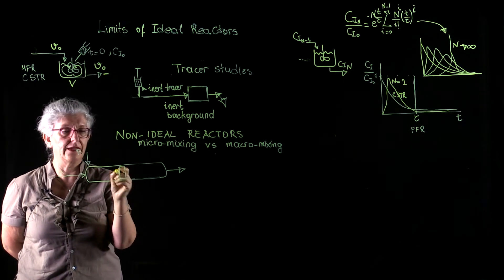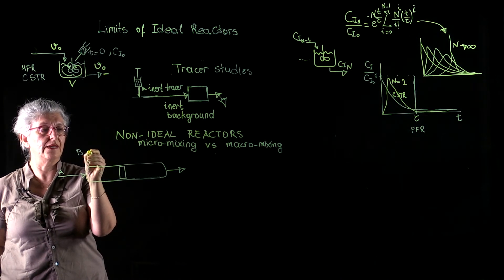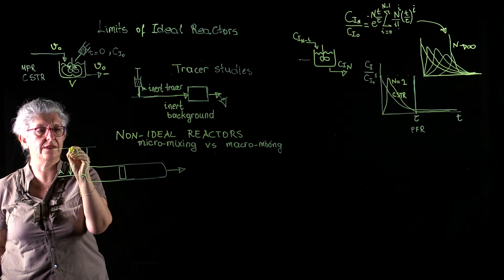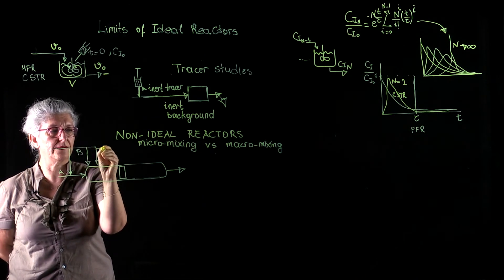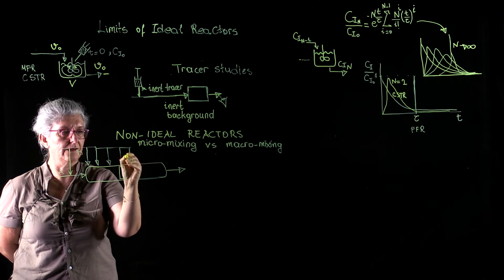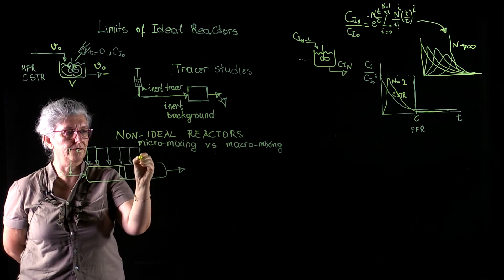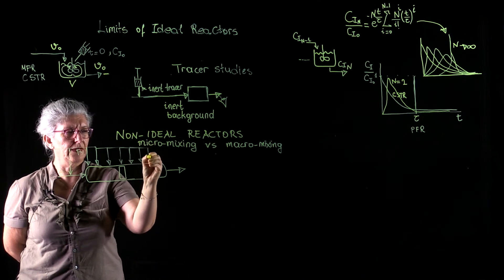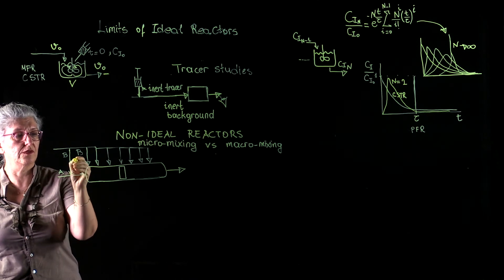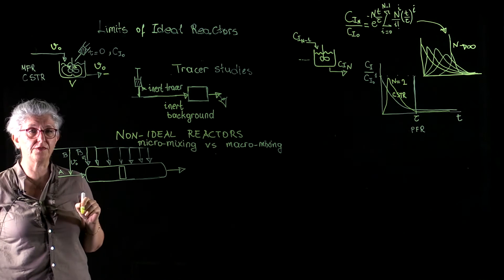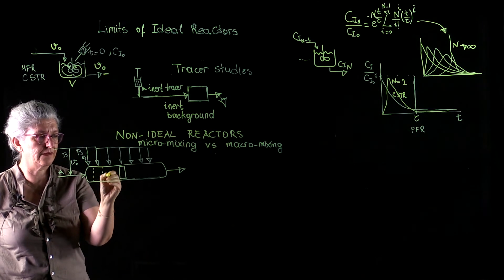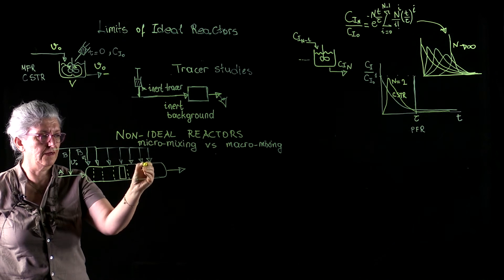But what if we introduce B in small segments, little by little? What happens? We have to write our balance equations. We have to know the volumetric flow rate of each of these streams. And we have to write our balance equations segment by segment.